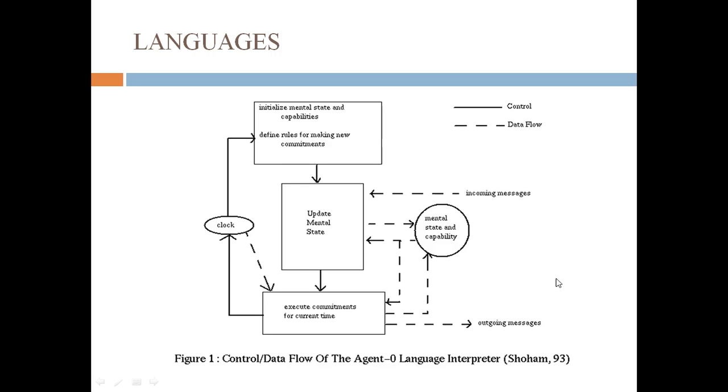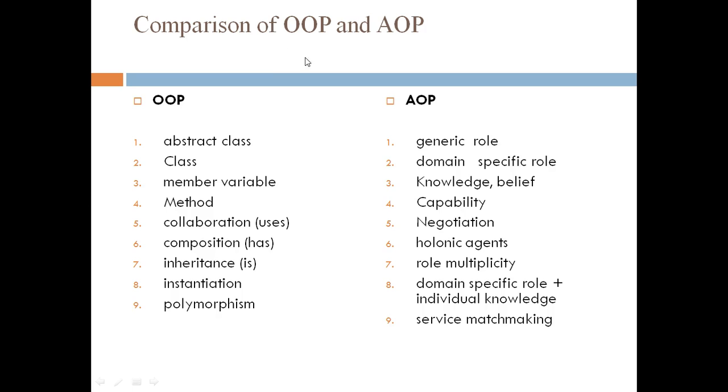Let us see the comparison of Object-Oriented Programming and Agent-Oriented Programming. OOP has abstract class while AOP has generic role. OOP is class specific, AOP is domain specific role. OOP has member variable, AOP has knowledge or belief. OOP has methods, AOP has function or capability. OOP has uses like collaborations, AOP has negotiations. OOP has compositions, AOP has holonic agents. OOP has inheritance, AOP has role multiplicity. OOP has instantiation, AOP has domain specific role plus individual knowledge. OOP has polymorphism, AOP has service matchmaking.